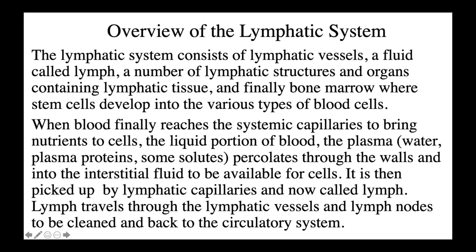Here's a quick overview of the lymphatic system. It consists of: lymphatic vessels, a fluid called lymph, a number of lymphatic structures and organs containing lymphatic tissue, and finally bone marrow, where stem cells develop into various types of blood cells.